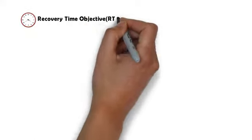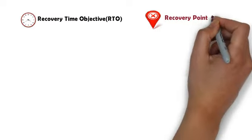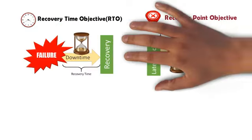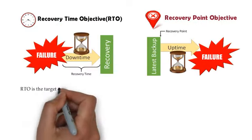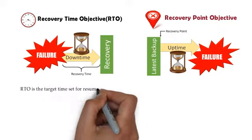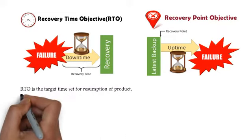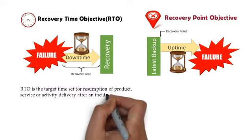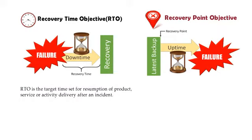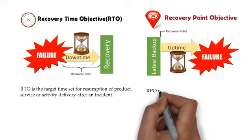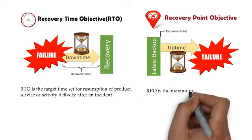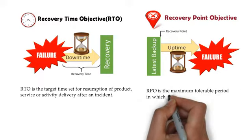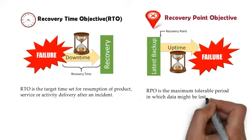What is recovery time objective and recovery point objective? RTO is the target time set for resumption of product, service, or activity delivery after an incident. Whereas RPO is the maximum tolerable period in which data might be lost.